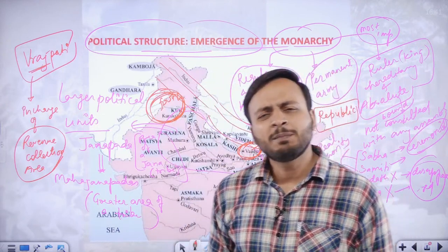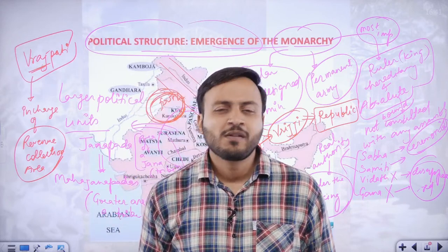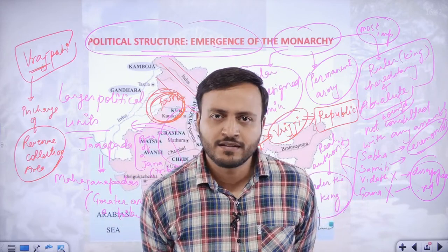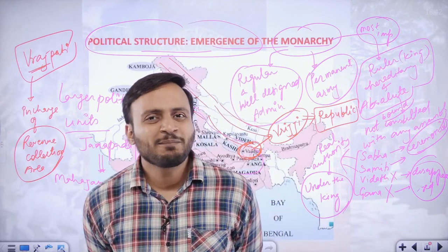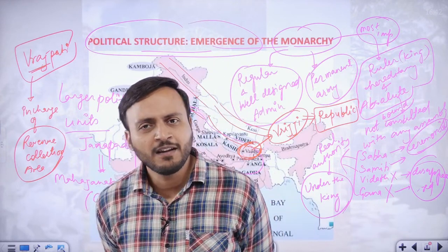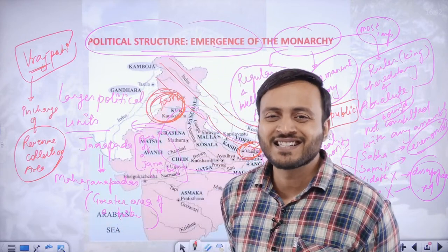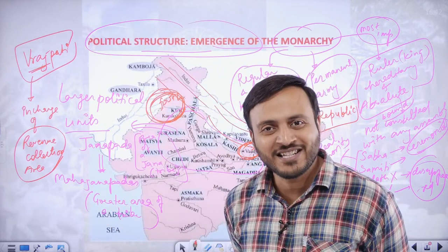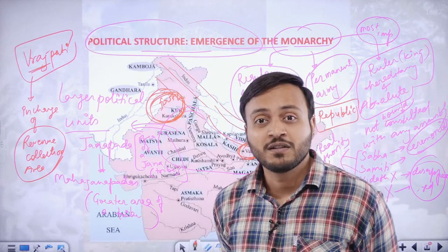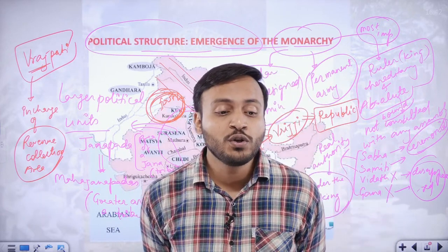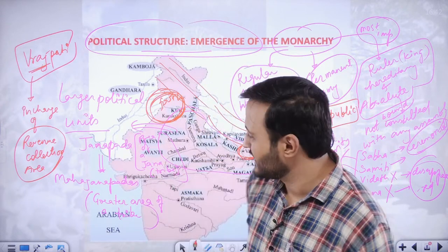Other people included the Rajan, then the Vishpati, and the Vrajapati. The position of Rajan had become hereditary. Some simple Rajans were no more just Rajan — they had become various pompous kings who used to take titles.